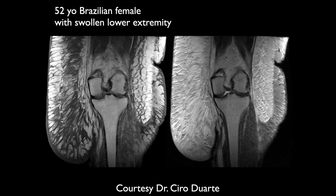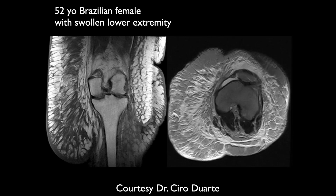Similarly, a 52-year-old Brazilian female with swelling of the lower extremity. There's marked edema, thickening, and enlargement of the subcutaneous fat. With elephantiasis, it'd be more like lymphatic obstruction — it's more like lymph tissue — and that's correct.